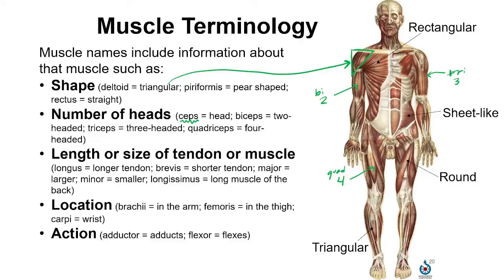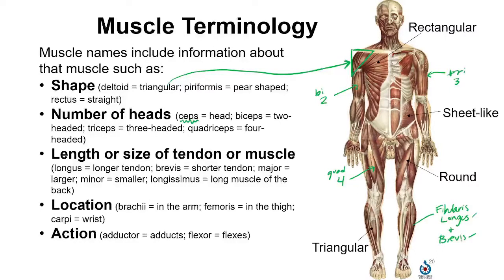The length or size of the tendon or the muscle can also be noted in the name. Often there are two muscles close to one another, one with a longer tendon and one with a shorter tendon. An example is the fibularis longus and brevis — longus being the longer tendon and brevis being shorter.